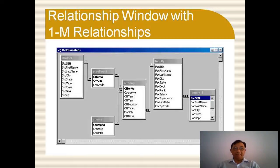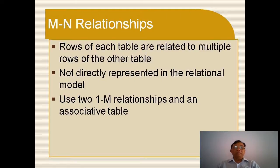Now I go to another definition. I use a CREATE TABLE statement to create the Faculty table, which has faculty social serial number, faculty first name, faculty last name, faculty city, faculty state, faculty zip code, faculty hire date, faculty department, and faculty supervisor. It has two constraints: primary key on faculty social serial number, and a foreign key on faculty supervisor referencing the Faculty table itself. The visual representation — one-to-many — is easier to comprehend than the CREATE TABLE statement. A student can have many enrollments; the student is the parent table and enrollment is the child table. Now I go to many-to-many relationships — rows of each table are related to multiple rows of the other table, not directly represented in the relational model. You can use two one-to-many relationships and an associated table to express the many-to-many relationship.